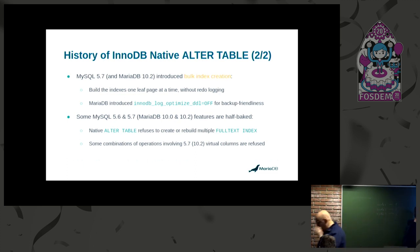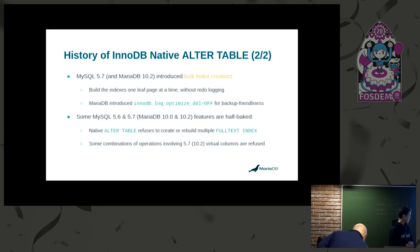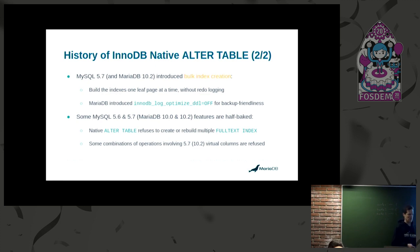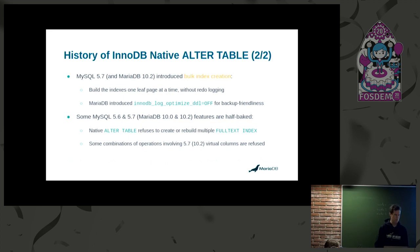I would claim that some features in MySQL 5.6 and 5.7 are a bit incomplete or half-baked because they don't support native ALTER TABLE to the full extent. For example, if you have multiple full-text indexes in your table and need to rebuild the table, it will be refused due to an artificial limitation that only one full-text index can be created at a time, so it falls back to algorithm copy. Also in 5.7, some combinations of operations involving virtual columns are not allowed — I would say only due to bad implementation of the virtual column feature.